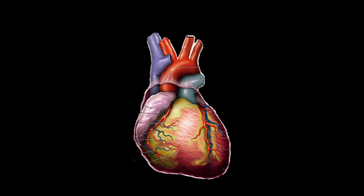Coronary artery disease is when you get a buildup of fatty plaques in different places in your coronary circulation. This atherosclerotic plaque builds up in different parts of your coronary vessels, and these are going to cause coronary artery disease, leading to downstream pathologies and diseases like stable angina and acute coronary syndrome.